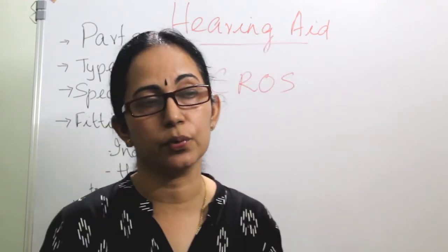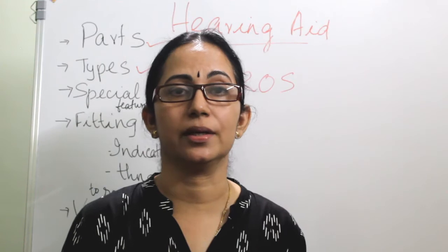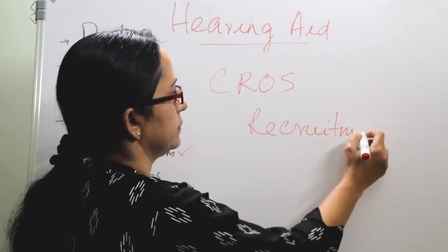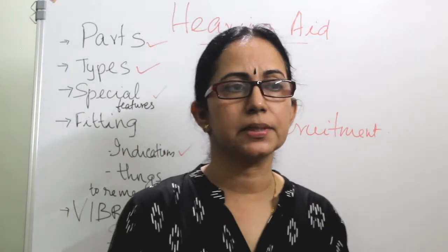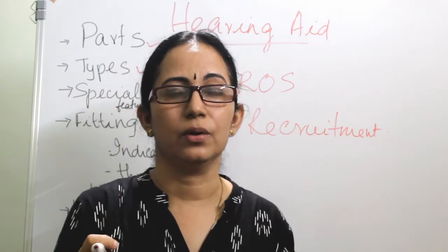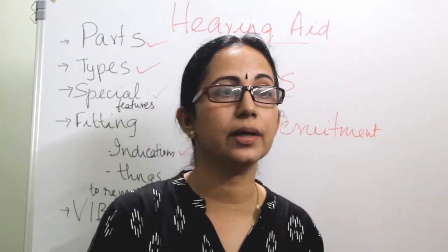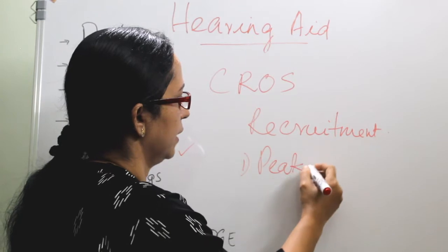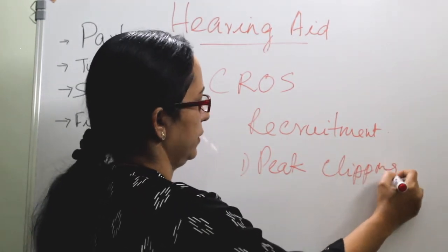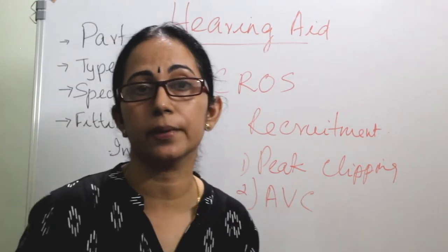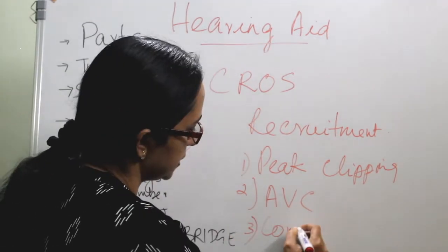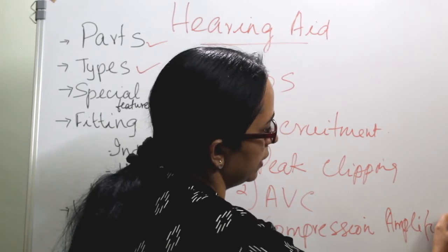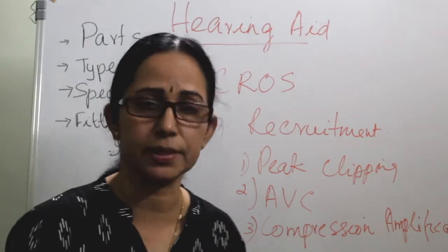Hearing aids are best suited for conductive hearing loss. In sensorineural hearing loss, there is a chance of recruitment, where the patient may hear a streaking or whizzing sound. Newer aids have methods to manage recruitment: peak clipping of sound, automatic volume control, and compression amplification. All these methods reduce the recruitment effect when fitting hearing aids in sensorineural hearing loss.